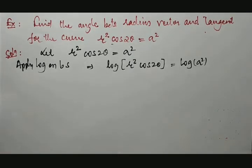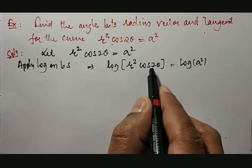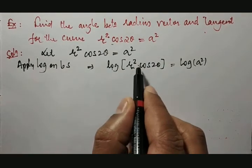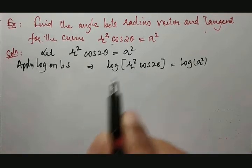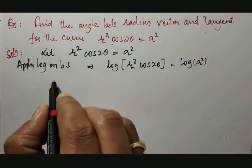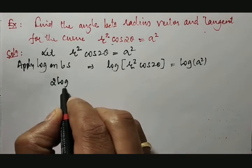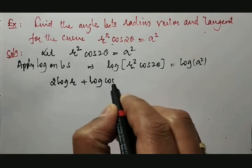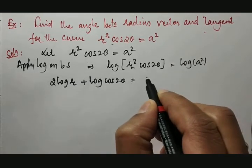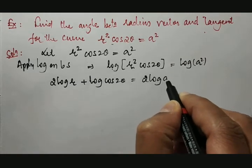As per the logarithm property, we write log of a times b as log a plus log b. Logarithm of a² is 2 log a. Therefore, it is 2 log r + log cos 2θ = 2 log a.